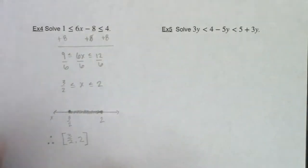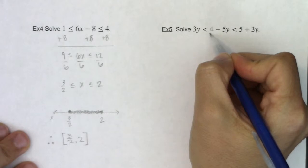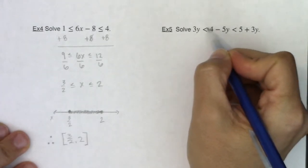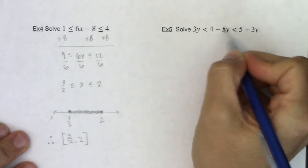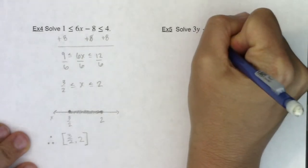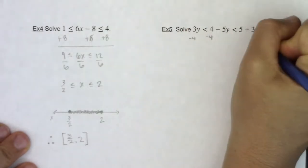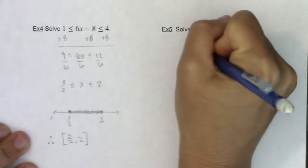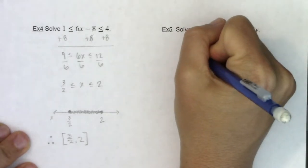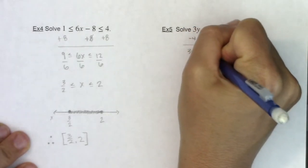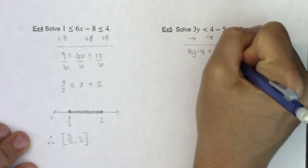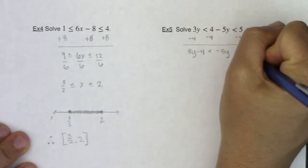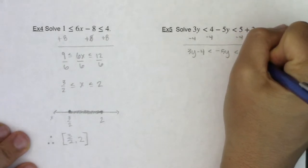The first thing I'm going to do is I'm going to go ahead and I'm going to subtract four from all three parts, because really I want to isolate my variable in the middle here. So let's subtract four, subtract four, subtract four. Let's see what we're working with. So I'm going to have 3y minus four here is less than negative 5y is less than, excuse me, less than one plus 3y.